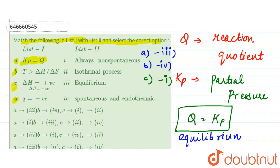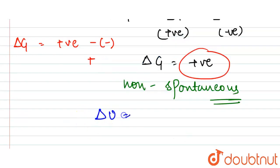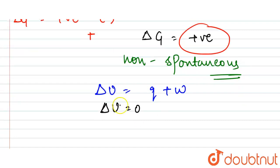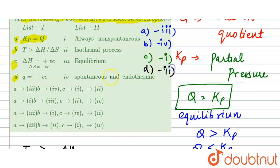For part (d), q is negative. For an isothermal process, temperature is constant, so the change in internal energy ΔU = 0. From the first law of thermodynamics, ΔU = q + w, so q = −w, meaning q becomes negative. This corresponds to option ii — Isothermal process. So the final answers are: a-3, b-4, c-1, d-2.